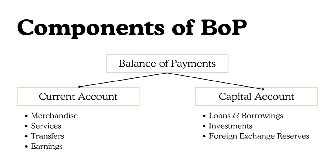There are two main components of Balance of Payment: the current account and the capital account. This is very important, so please pay attention. The current account in BOP comprises transactions in goods and services alongside transfers during the current time period — that is, transfers and earnings.